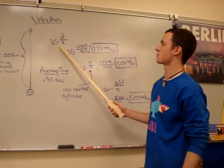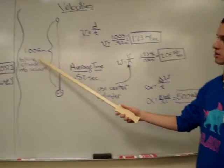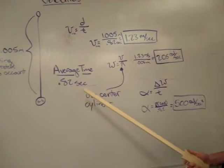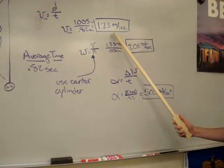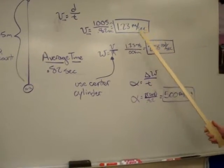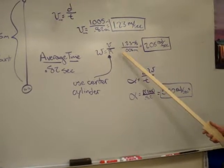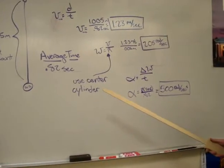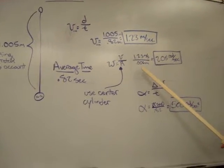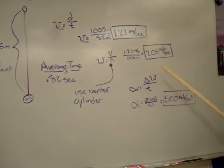So as we all know, average velocity equals distance over time. Since the distance of the stretched string was 1.005 meters, and the average time was 0.82 seconds, we were able to calculate that the average velocity was 1.23 meters per second. We then converted that into angular velocity, noting that omega equals v over the radius. We used the radius of the center of the cylinder, since that's the radius that the string is actually turning around. So that's 1.23 meters per second over 0.006 meters equals 205 radians per second. That's pretty quick.